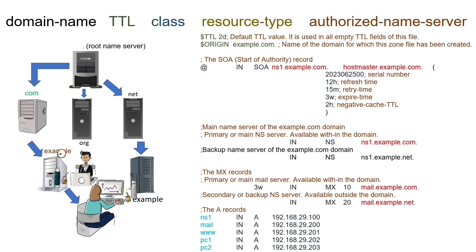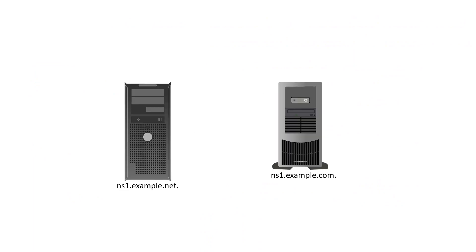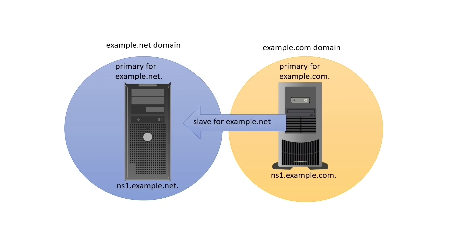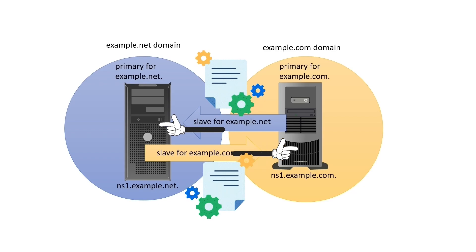A name server can act as a primary name server for one domain and a backup name server for another domain at the same time. This flexibility allows administrators to use existing name servers to configure backup name servers for other domains. For example, suppose we have two primary name servers ns1.example.com and ns1.example.net for the domains example.com and example.net. We can configure ns1.example.com as the backup for ns1.example.net and vice versa, allowing us to configure backup name servers without adding any additional name servers to the network.